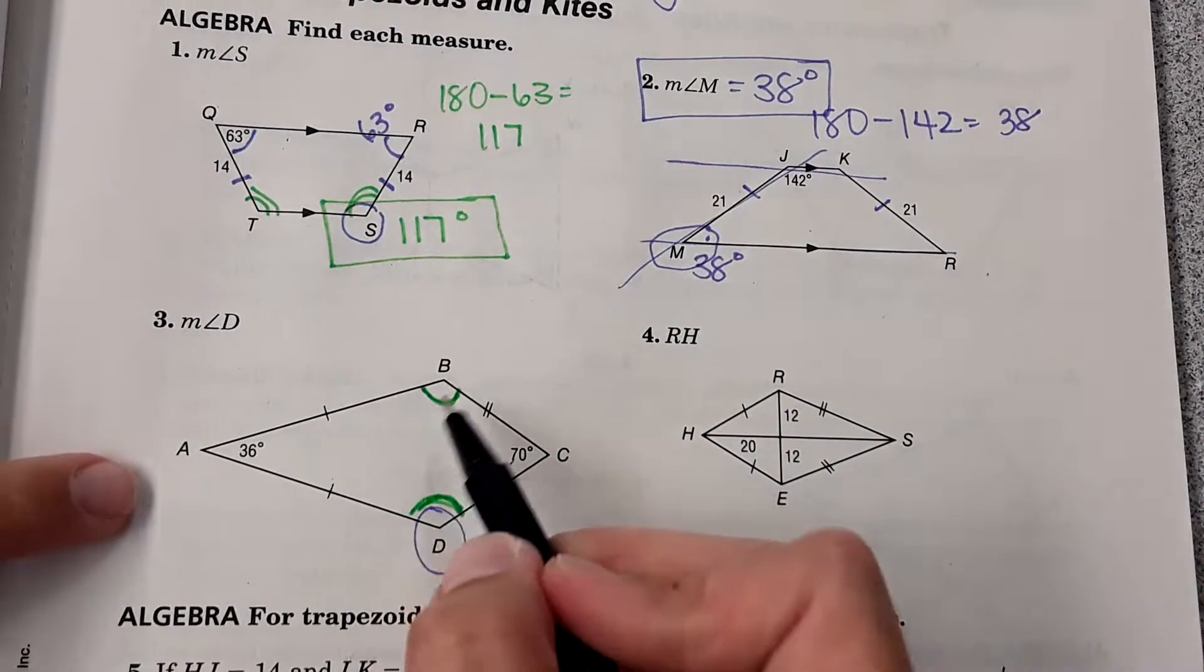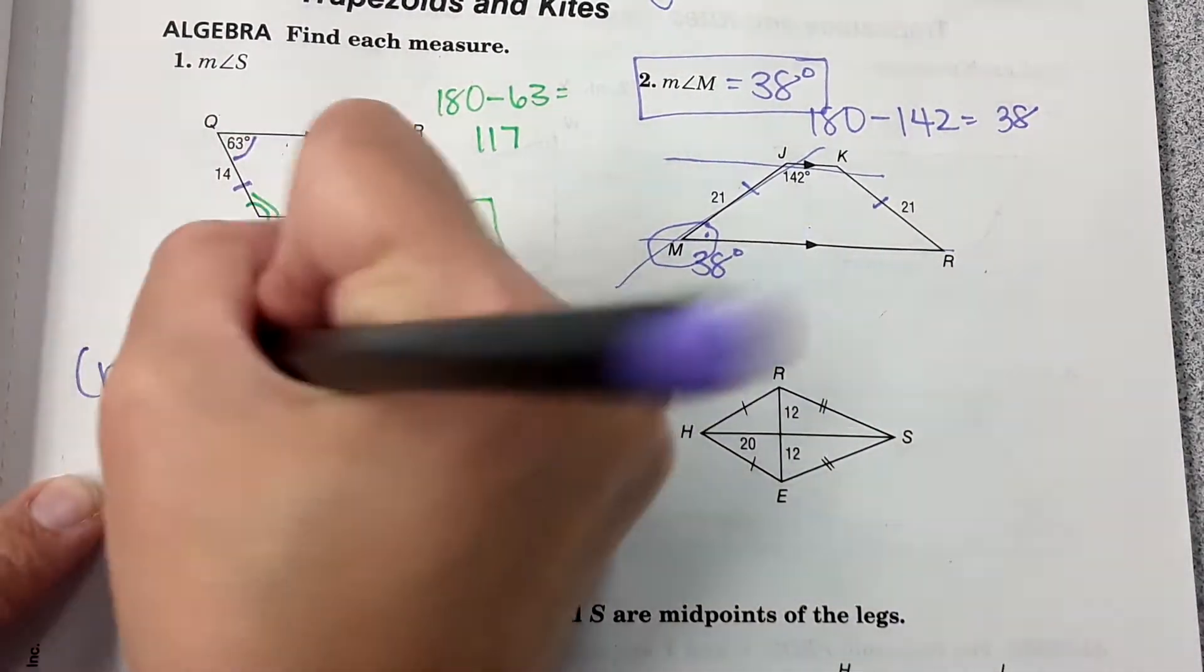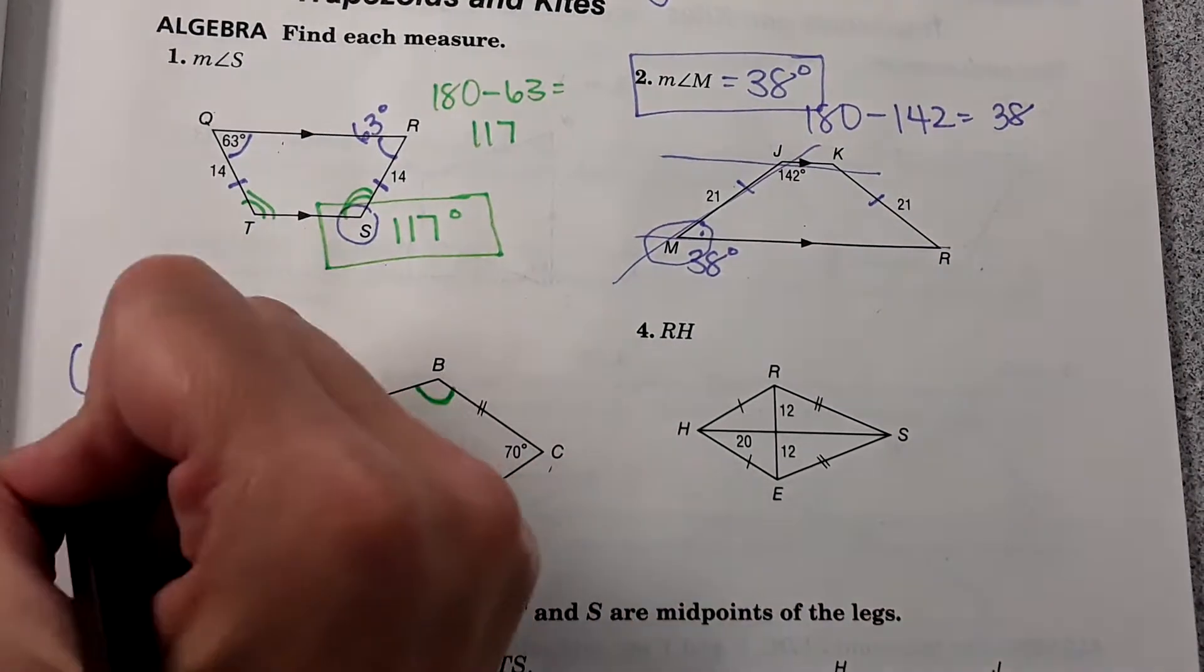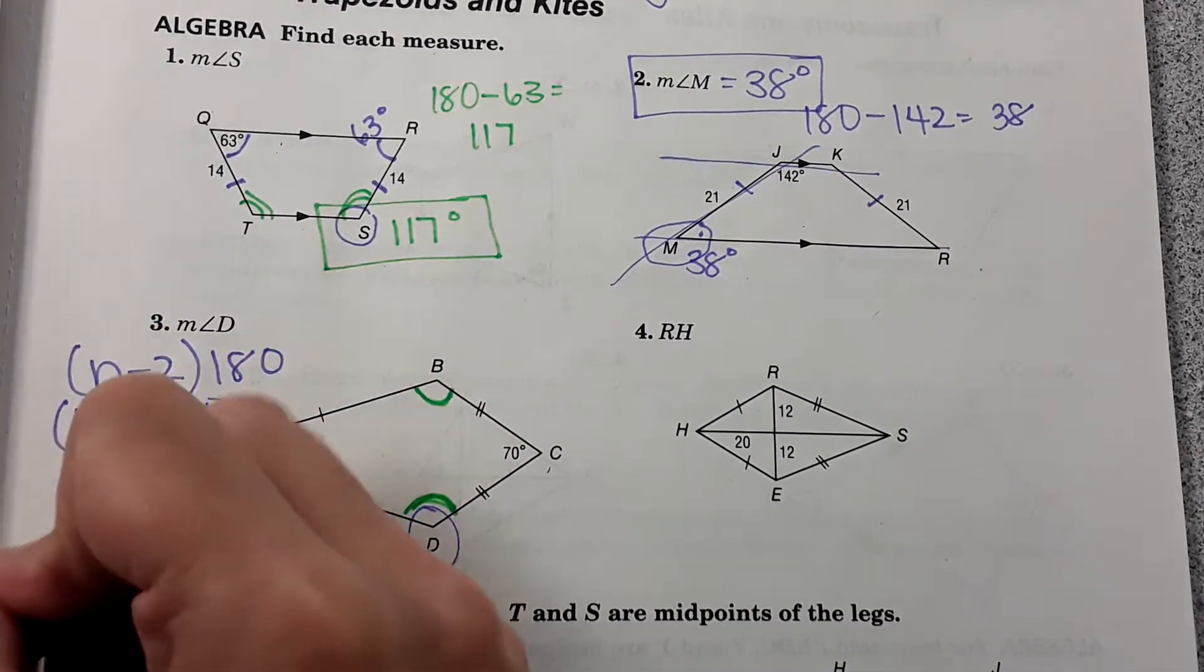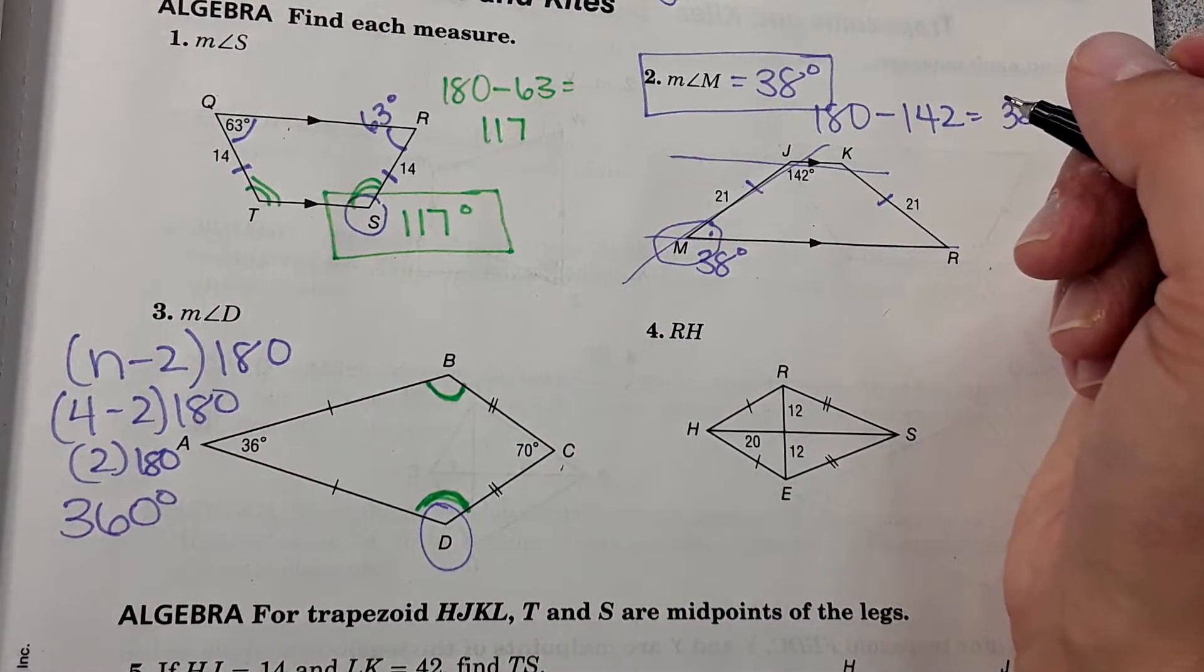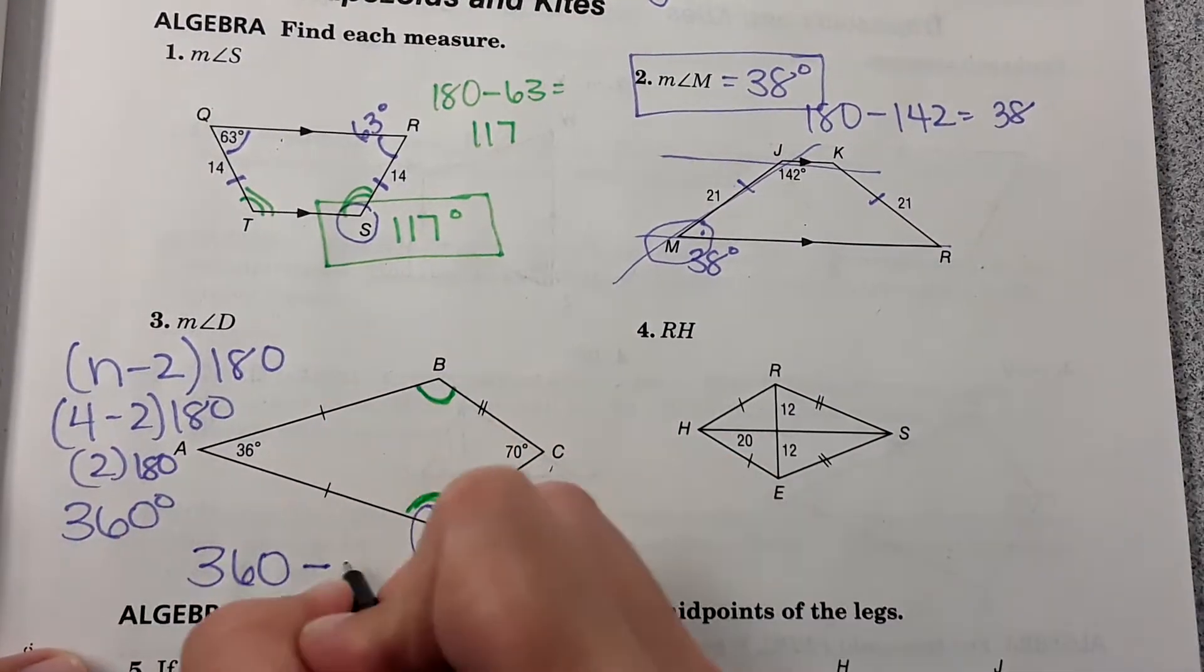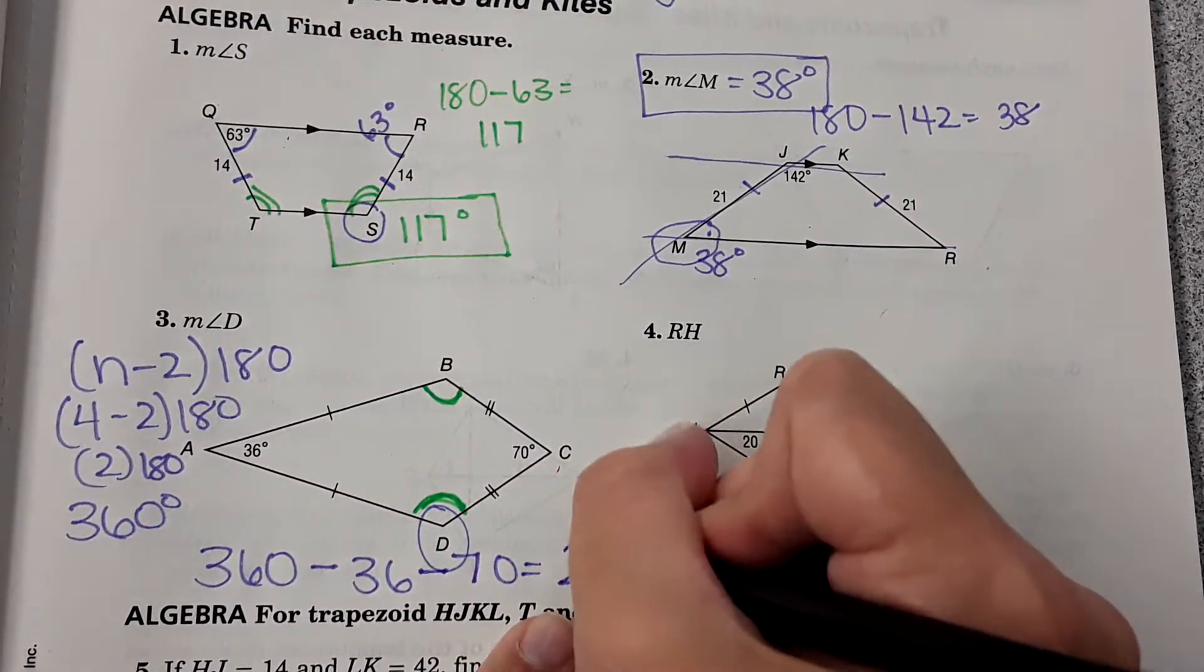We can find the total angle measures for a kite using that equation n minus 2 times 180. So we can take the number of sides subtract 2 times 180, that'll give us the total angle measures of the entire quadrilateral. So 4 minus 2 times 180 is 360 degrees. Every quadrilateral will have a total of 360 degrees for their angles. Now with the 360 I'm going to subtract these two angle measures, 36 and 70, and I'm left with 254 degrees.